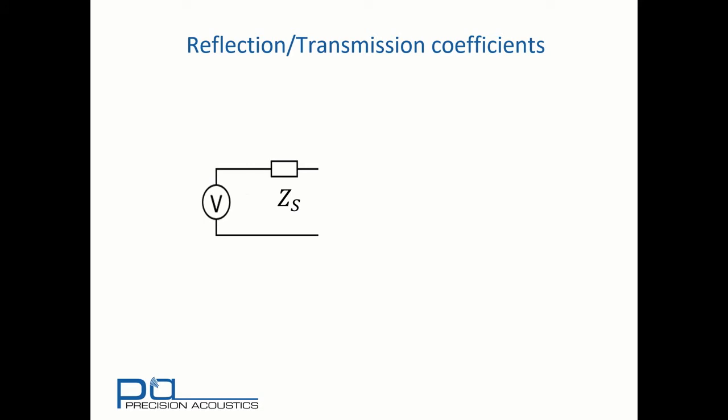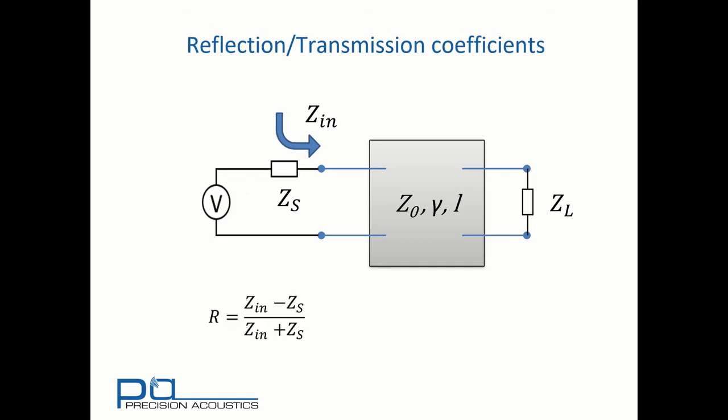If we consider a general voltage source driving through a source impedance into a transmission line that is loaded with ZL, we know that we can effectively replace the loaded line with an input impedance. And therefore, we can express the reflection and transmission coefficients with an equation like this for reflection, which is simply the difference of the input impedance and the source impedance over the sum of input and source impedances. Or the transmission coefficient, which is twice the input impedance divided by sum of input and source impedances. It's important to recall that these are amplitude reflection and transmission coefficients. For quantities based on energy, such as intensity or power, reflection and transmission coefficients take a slightly different form.